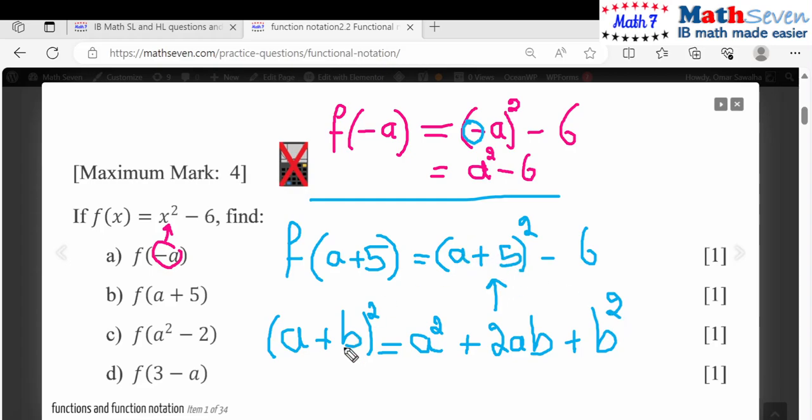Now apply it for this one. So a squared plus b, so 2 times 5 it will become 10a plus b, so 5 squared is 25.